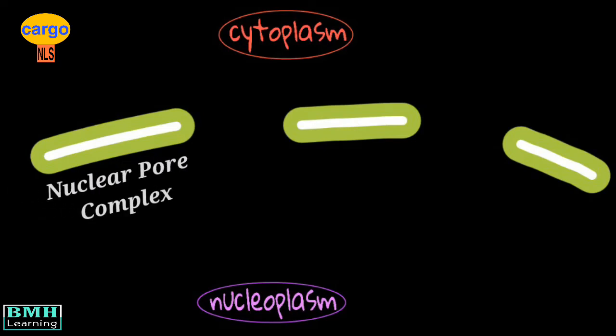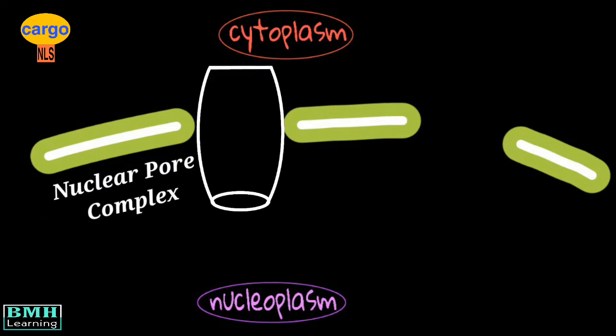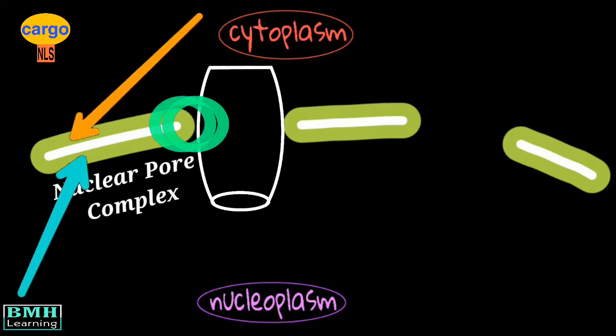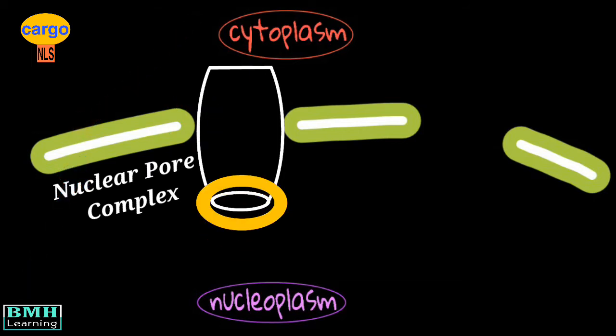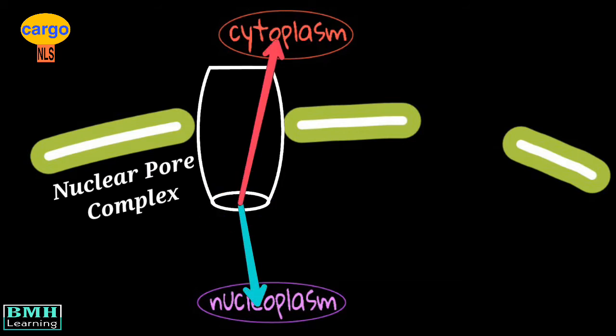There is a nuclear pore complex embedded in the nuclear envelope where the inner nuclear membrane and the outer nuclear membrane fuse, thus forming a gateway that regulates the flow of proteins between the nucleoplasm and the cytoplasm.